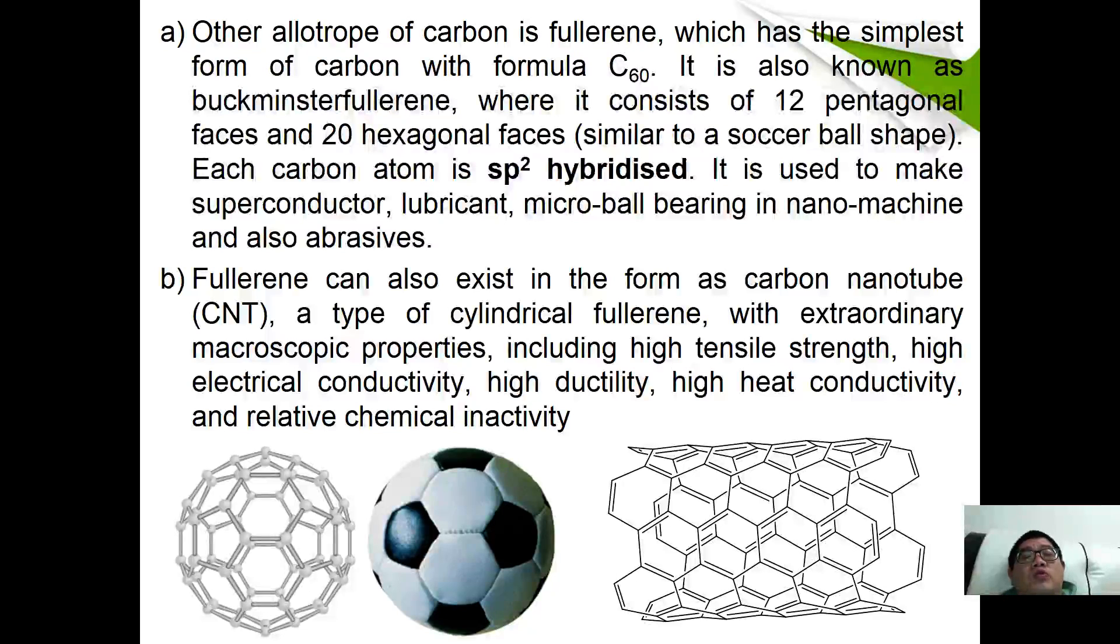Another allotrope is fullerene. Fullerene has the most simple form, C60. Fullerene can exist in the carbon nanotube, a cylindrical fullerene with extraordinary microscopic properties including high tensile strength, high electrical conductivity, high ductility, high heat conductivity, and relatively chemical inertness. A lot of study has been done towards this carbon nanotube.